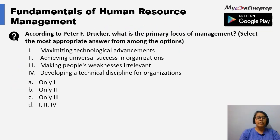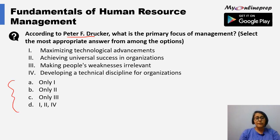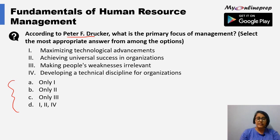The first question is: according to Peter F. Drucker, what is the primary focus of management? We are given certain statements and need to choose from the given options. This type of question involving multiple statements has been observed in various previous examinations. The statements are: first, maximizing technological advancements; second, achieving universal success in organizations; third, making people's weaknesses irrelevant; and fourth, developing a technical discipline for organizations.